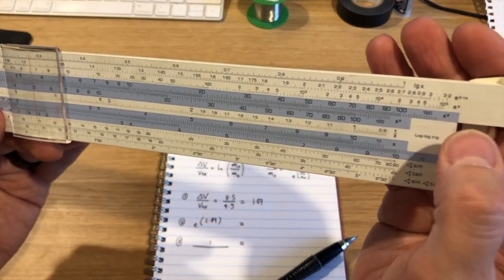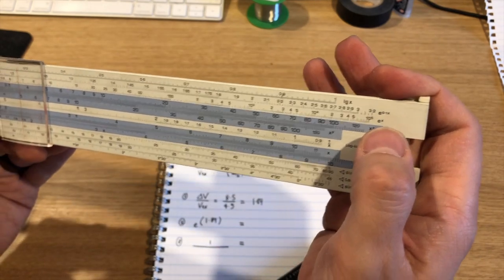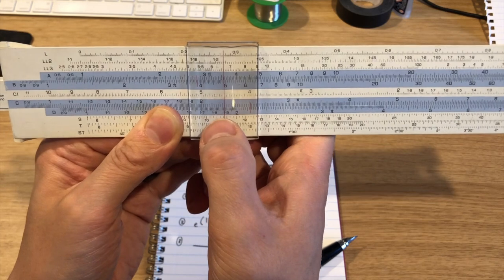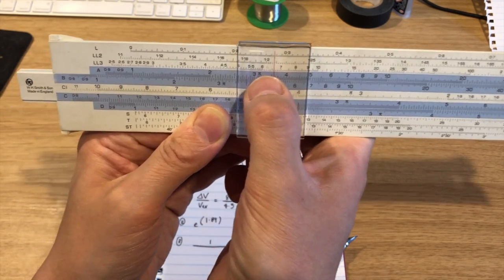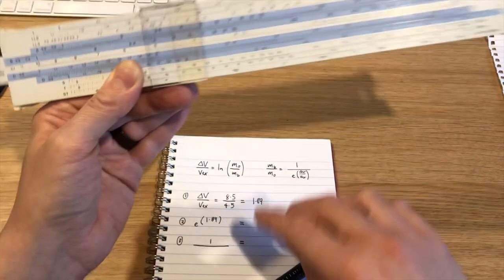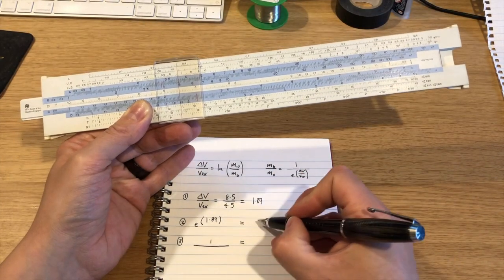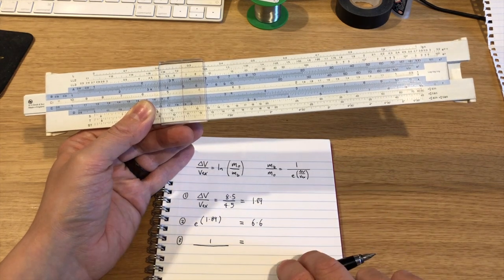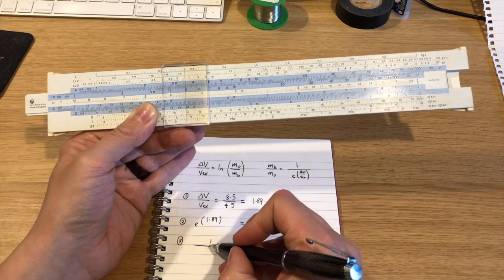Now we've got an e to the power x function here, and we're already lined up at x equals 1.89. And you can see that the answer here is 6.6, which is our second part here. 6.6. And that moves along to step 3.